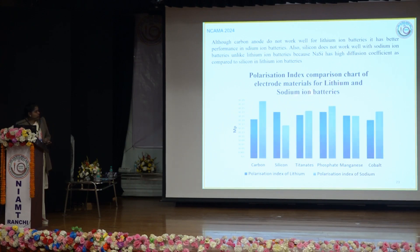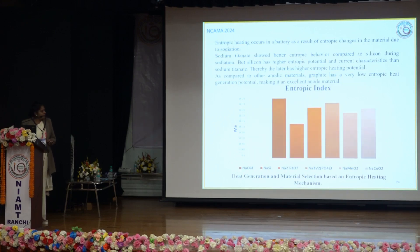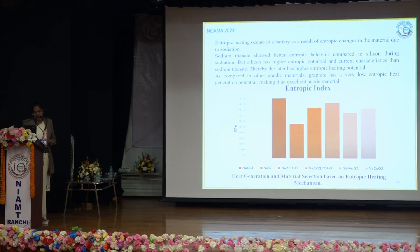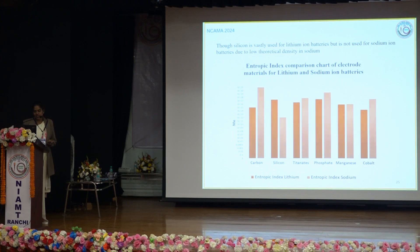In the comparison with lithium ion battery materials, it was found that carbon anode may not work well for lithium ion batteries but has better performance for sodium ion batteries. For the entropic index, sodium titanate showed better entropic behavior compared to silicon during sodiation, and compared to other anodic materials, graphite has a very low entropic heat, which makes it excellent for an anode. Although silicon is vastly used for lithium ion batteries, it is not suitable for NIB due to its low theoretical capacity in sodium.